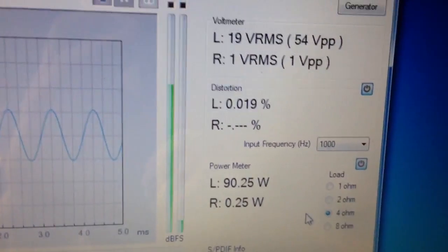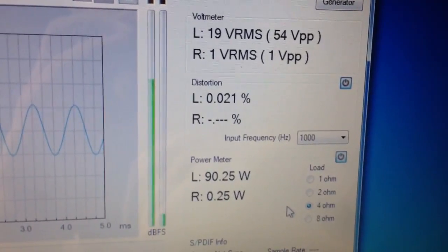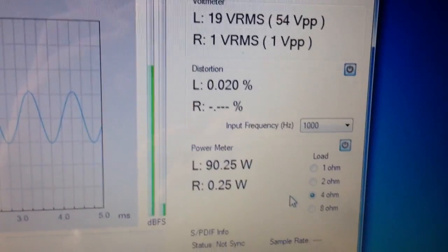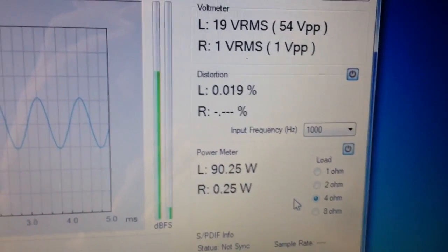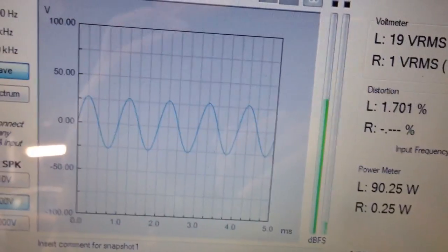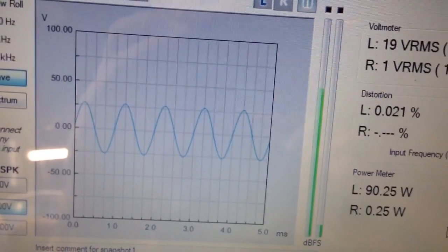We can see right here this amp's putting out 19 volts. Distortion's very low, 0.02, 0.19, it's fluctuating. The power meter, 90 watts, so that's actually a little bit higher than what Rockford says. But that'll be a real nice clean signal coming out of there. That way there's no distortion. Keep everything clean and max it out.